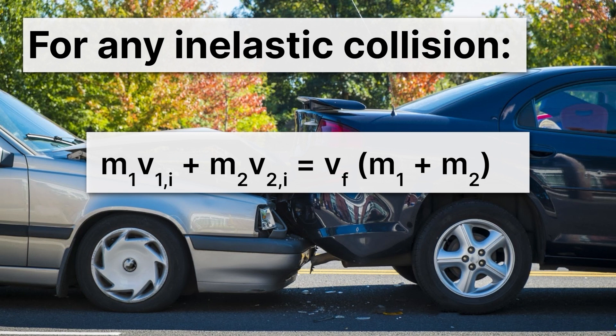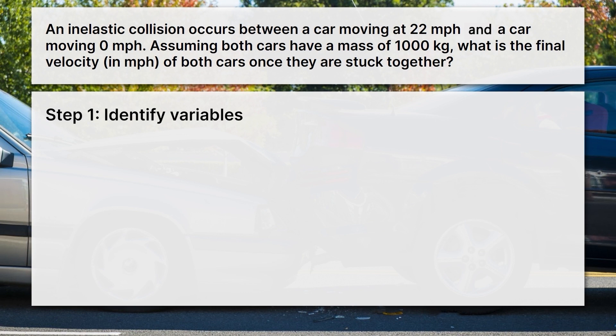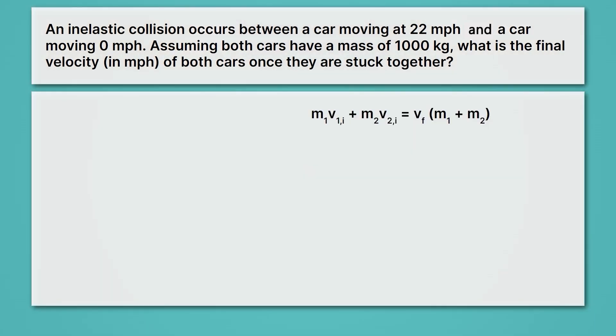So now let's actually make use of this equation. Let's solve our problem. And we're going to need to follow a couple steps. They're exactly the same ones from our elastic collisions. Step one, identify the variables. So we just want to write down clearly what information we have in terms of all the variables from our equation. And step two, we're going to plug in the variables that we know. And in step three, we're going to solve for the unknown. Let's go ahead and solve this problem.